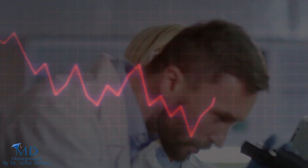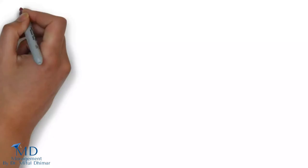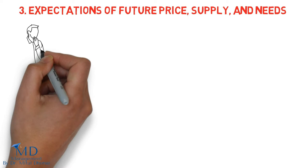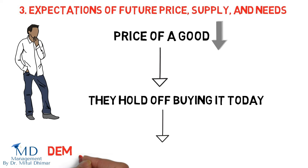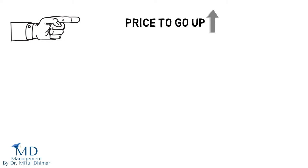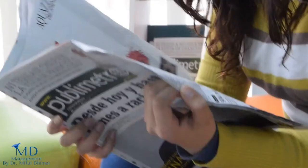Three, expectations of future price, supply, and needs. If a buyer expects the price of a good to go down in the future, they hold off buying it today, so the demand for that good today decreases. On the other hand, if a buyer expects the price to go up in the future, the demand for the good today increases. For example, if we read that there will be a new tax on vodka starting next week, people will want to buy more now before the price increases.